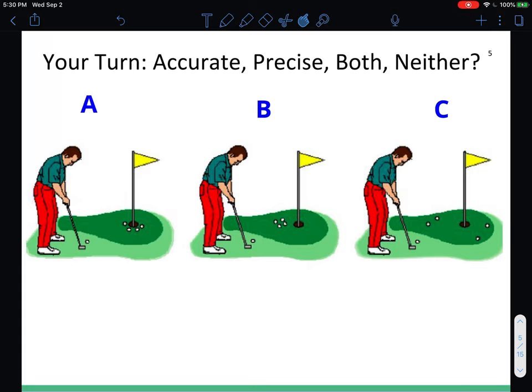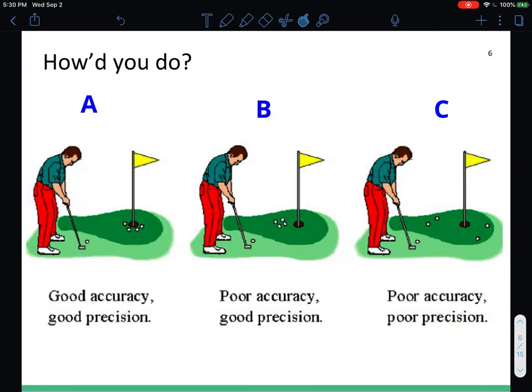Let's check your answers. First one, good accuracy, good precision. Doesn't look like he necessarily hit any in the hole, but he is right around there. The second one, again he is precise, however he's not very close to the hole, so poor accuracy. And last, poor accuracy and poor precision. Not close to the hole and none of the balls are near each other either.